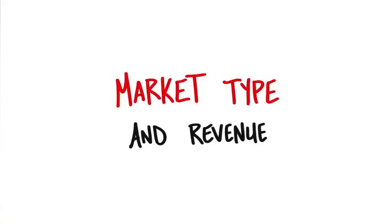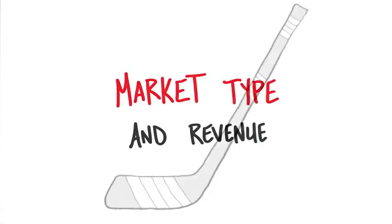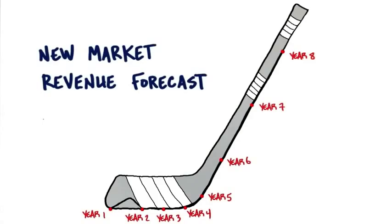The last thing I really want to mention, which belongs in this lecture, is the effect of market type on revenue. This is really interesting because you might have heard about startups and something called the hockey stick. The hockey stick is actually this kind of curve, and it turns out what the hockey stick really represents are startups in a new market.